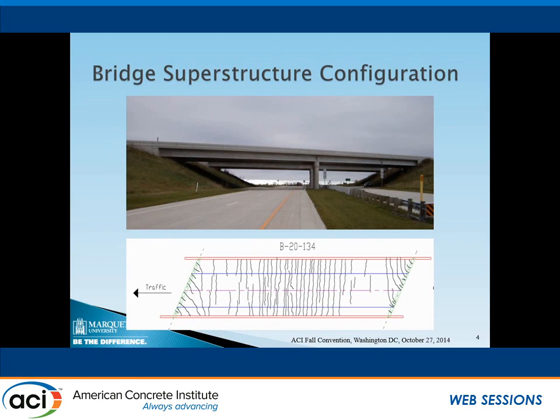This is the bridge we chose for modeling. It is a bridge on Highway 151 in Waupun, Wisconsin. This bridge is a very typical highway bridge in Wisconsin, including two prestressed precast concrete girders. The bridge deck is cast-in-place, including epoxy-coated reinforcement. This bridge developed cracking shortly after it opened to traffic. We can see majority of the cracking happened on the top at the interior support, likely due to the negative moment. Also, additional cracking was observed in the skew area.